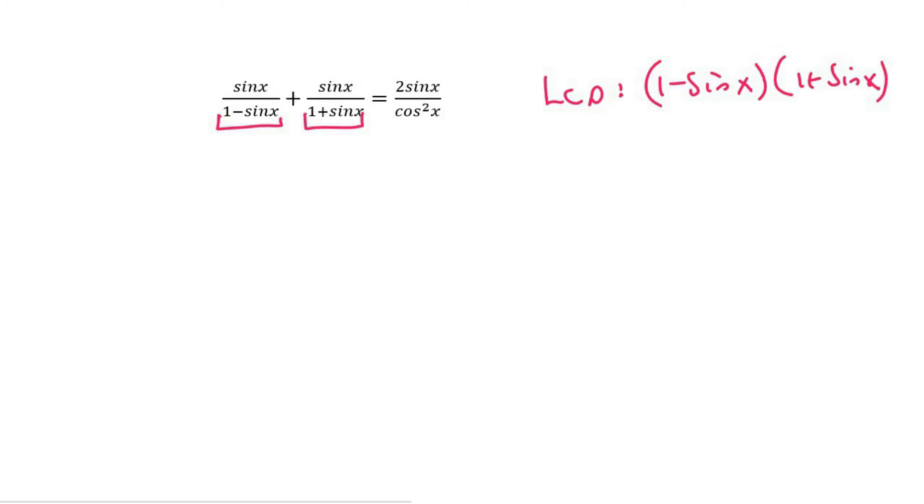So what that means is that we are going to multiply this one with 1 plus sine x and this one with 1 minus sine x.